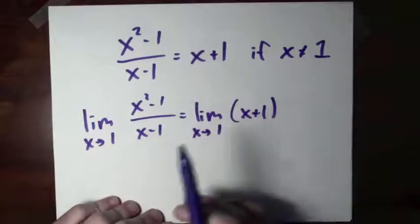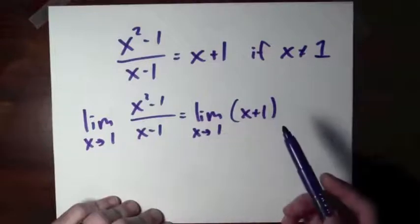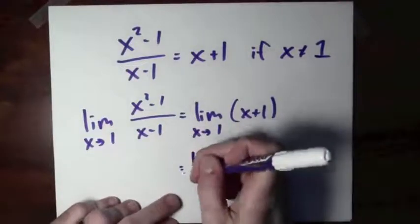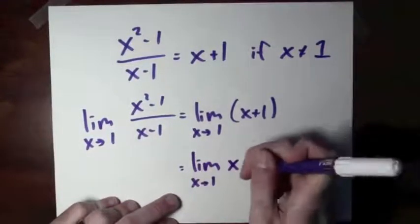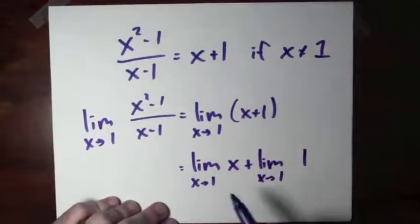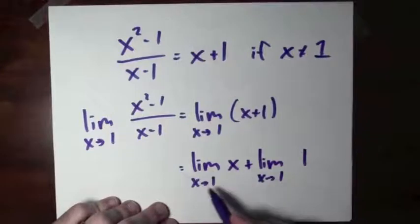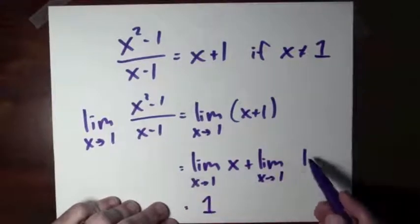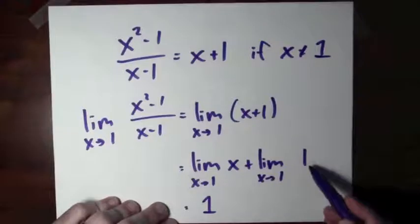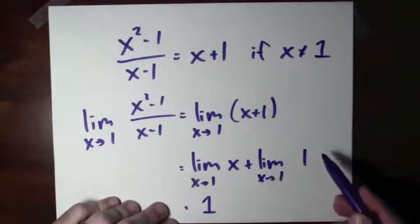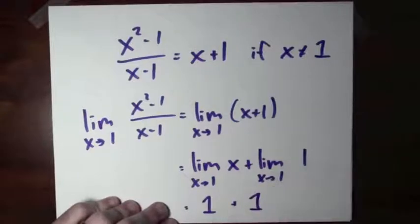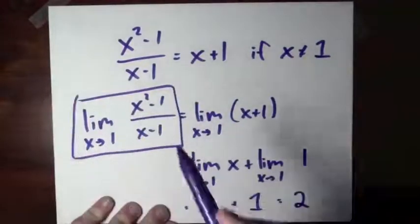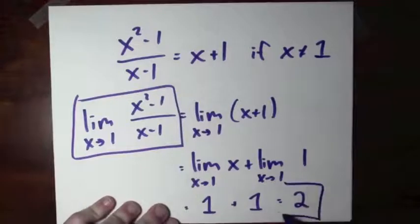So the limit as x goes to 1 of x squared minus 1 over x minus 1 is the limit as x approaches 1 of x plus 1, because the limit doesn't depend upon the value of the function at 1 — only upon the values near 1. The limit of x plus 1 as x approaches 1 is the limit of a sum, and the limit of a sum is the sum of the limits. So I rewrite this as the limit of x as x goes to 1, which is 1, plus the limit of 1 as x goes to 1, which is also 1. And 1 plus 1 is 2. So the limit of x squared minus 1 over x minus 1 as x approaches 1 is 2.